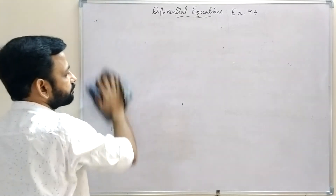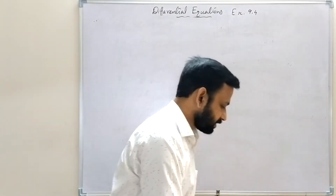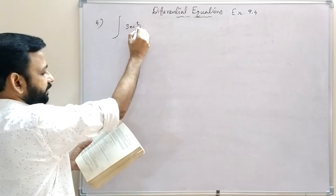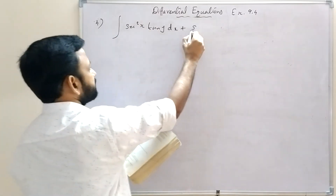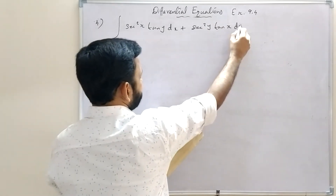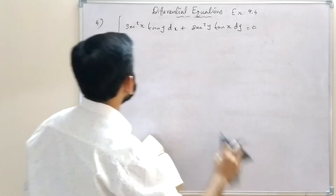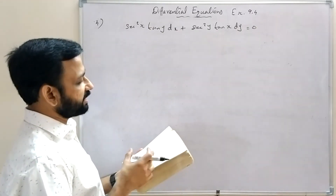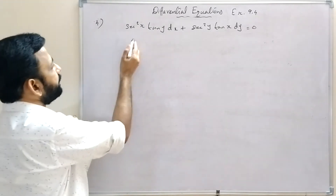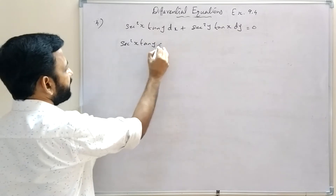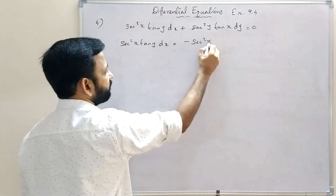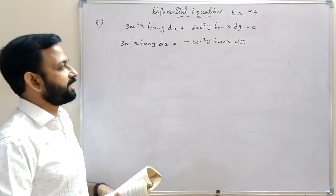Question 4: sec²x · tan y dx + sec²y · tan x dy = 0. Rearranging: sec²x · tan y dx = -sec²y · tan x dy. We need x and dx on one side, y and dy on the other.